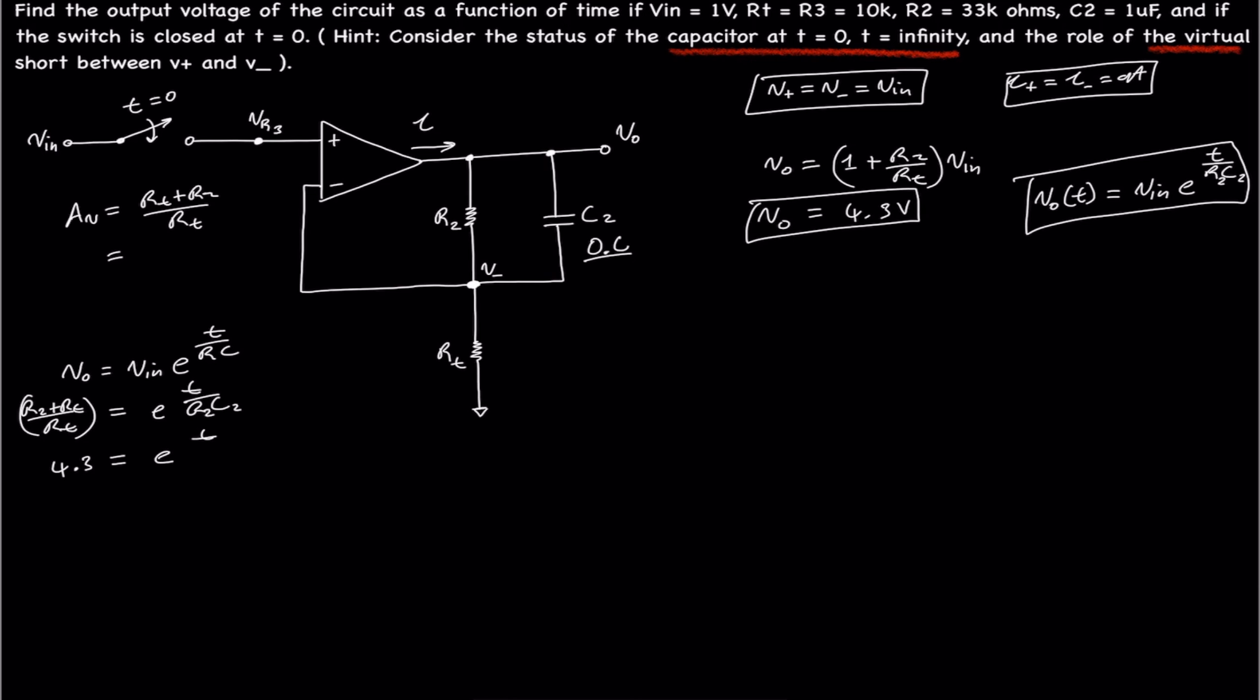That is equal to e to the t divided by tau. I should probably just use tau. Tau is R2 times C2. So, divided by tau. We solve for t. We then get 48.13 milliseconds.